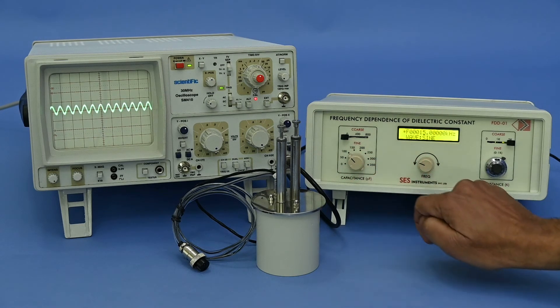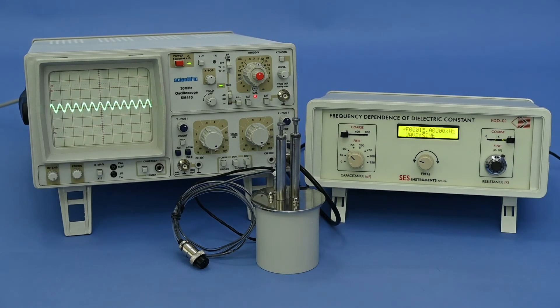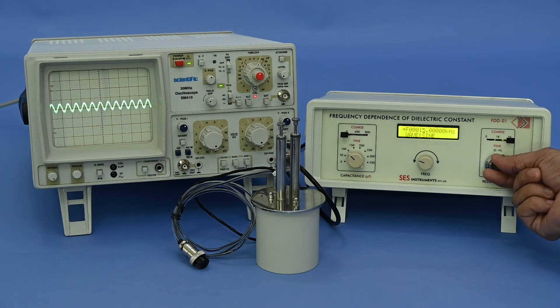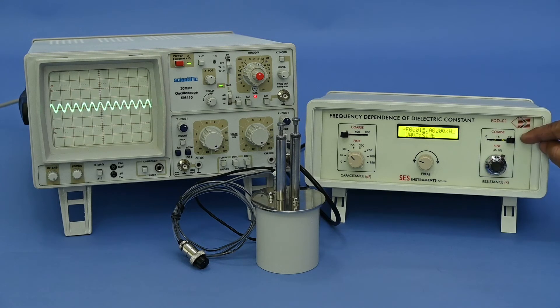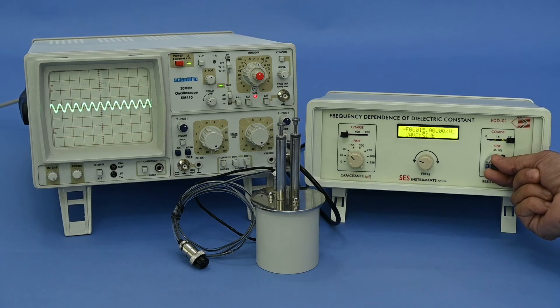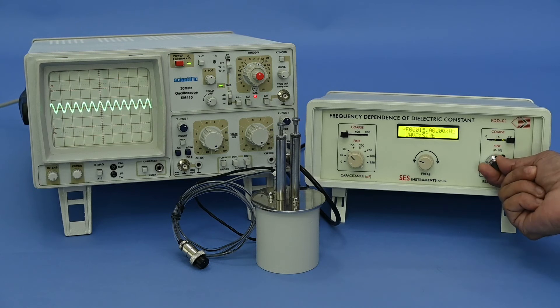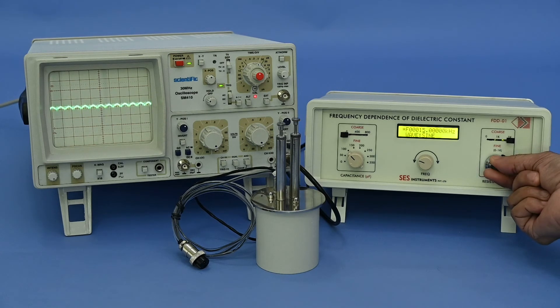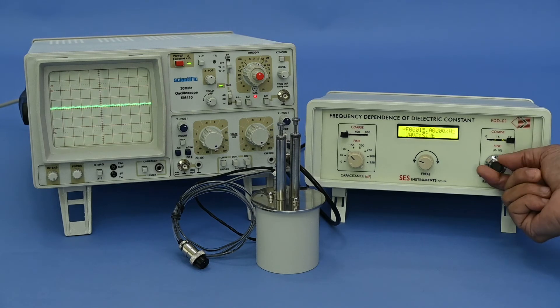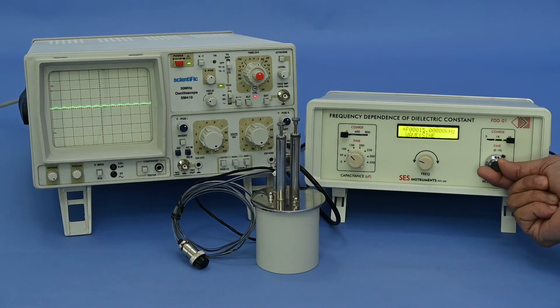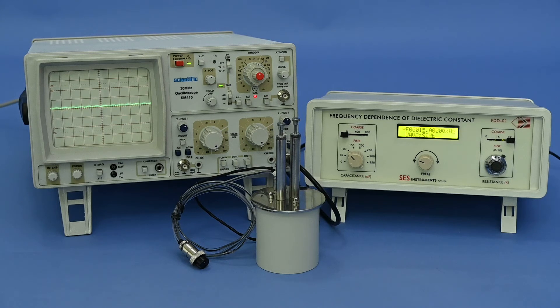In continuation of balancing the bridge, the same frequency 15 kHz, set the coarse and fine values of R4. As we see the minimum amplitude on CRO. You can see here, it is increasing, it is decreasing, and now again it is increasing. So, when it is minimum, that is the value of R4, and value is 2.022.